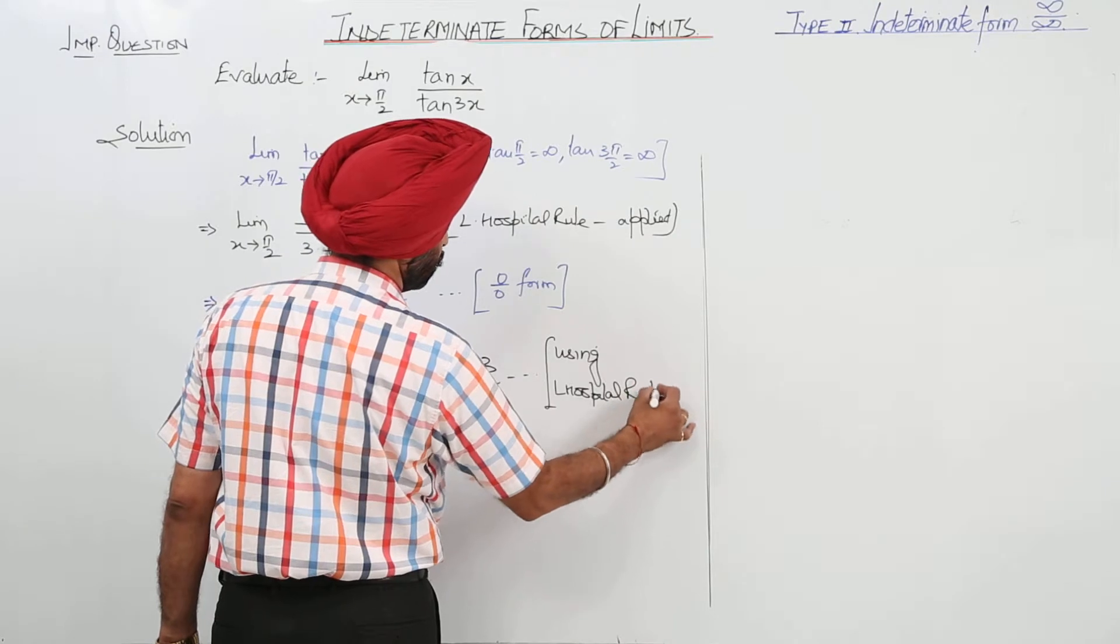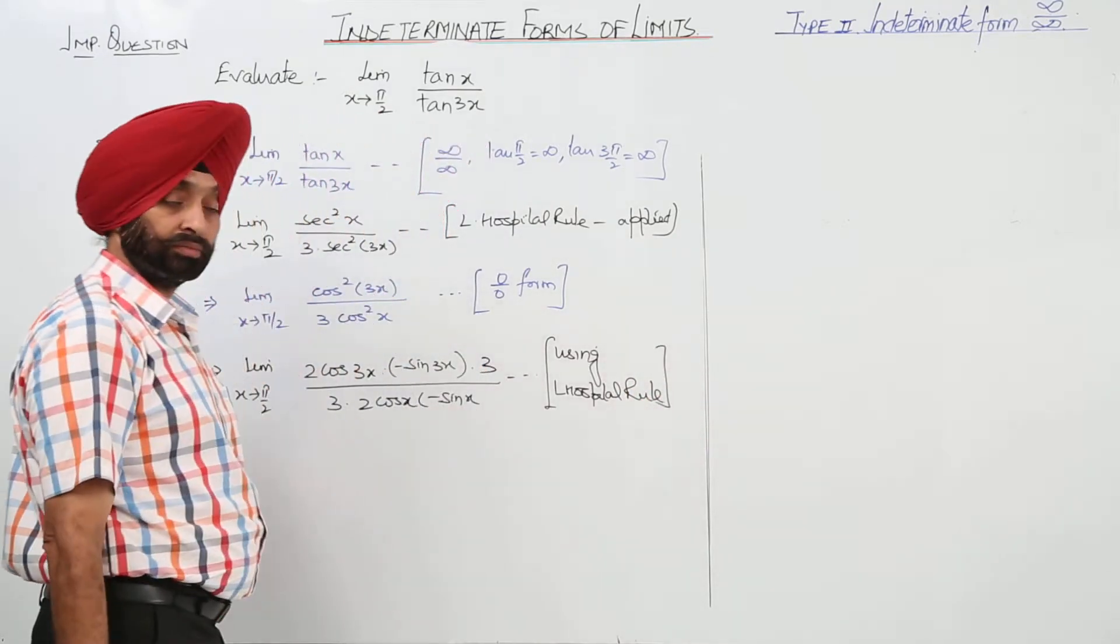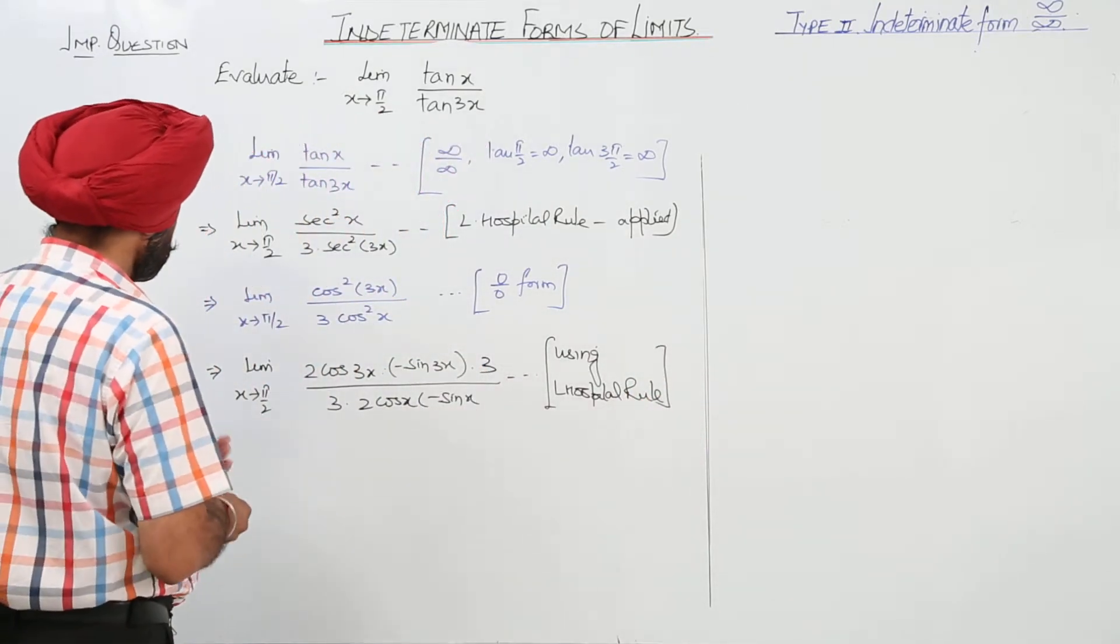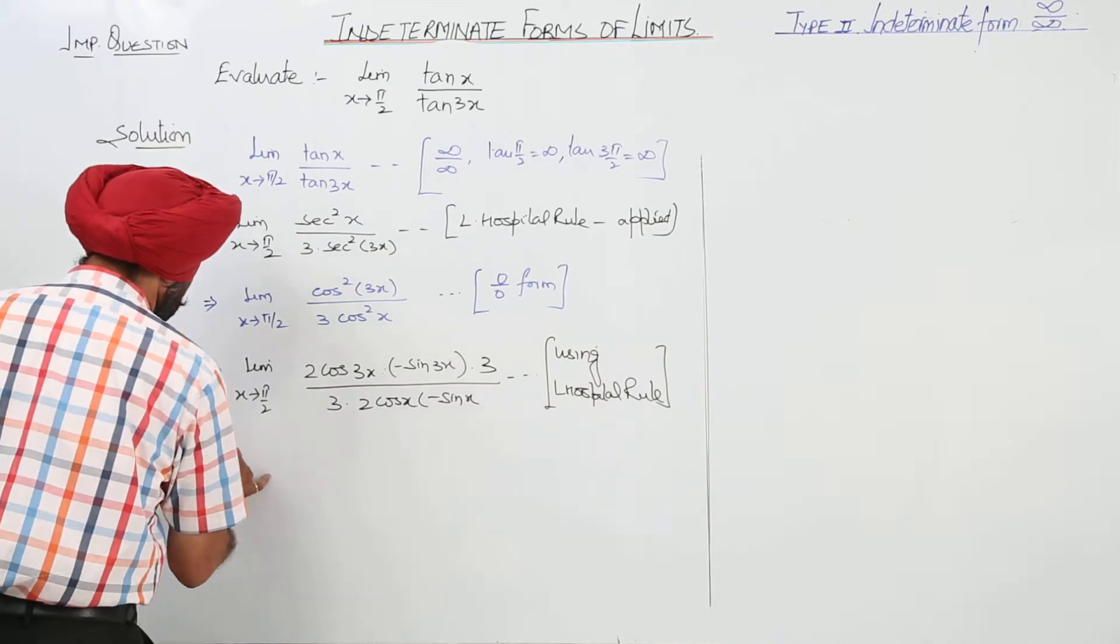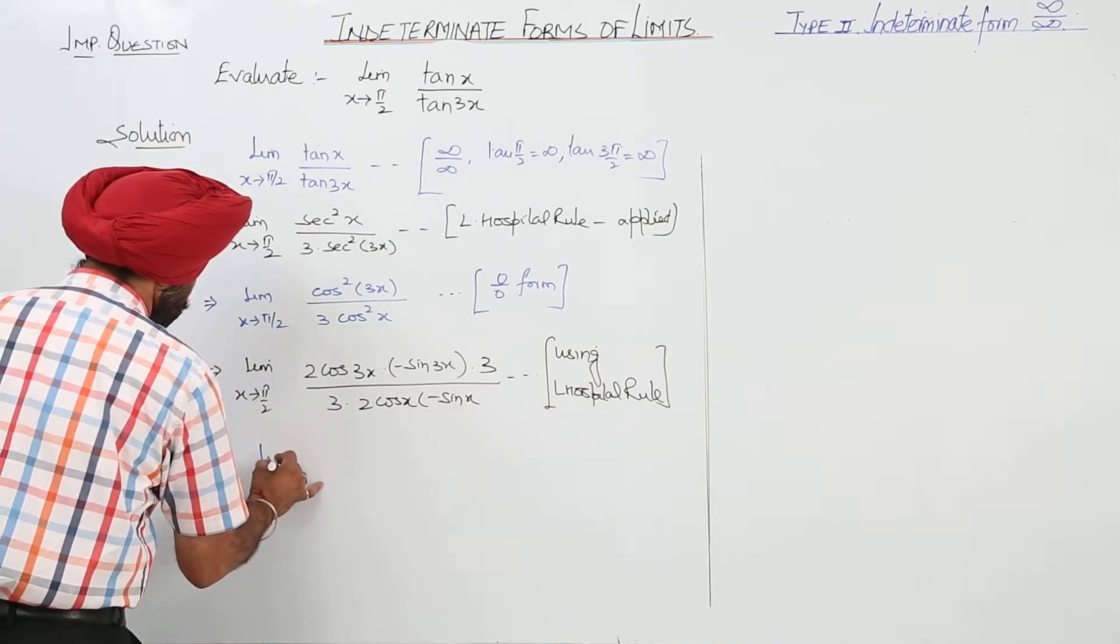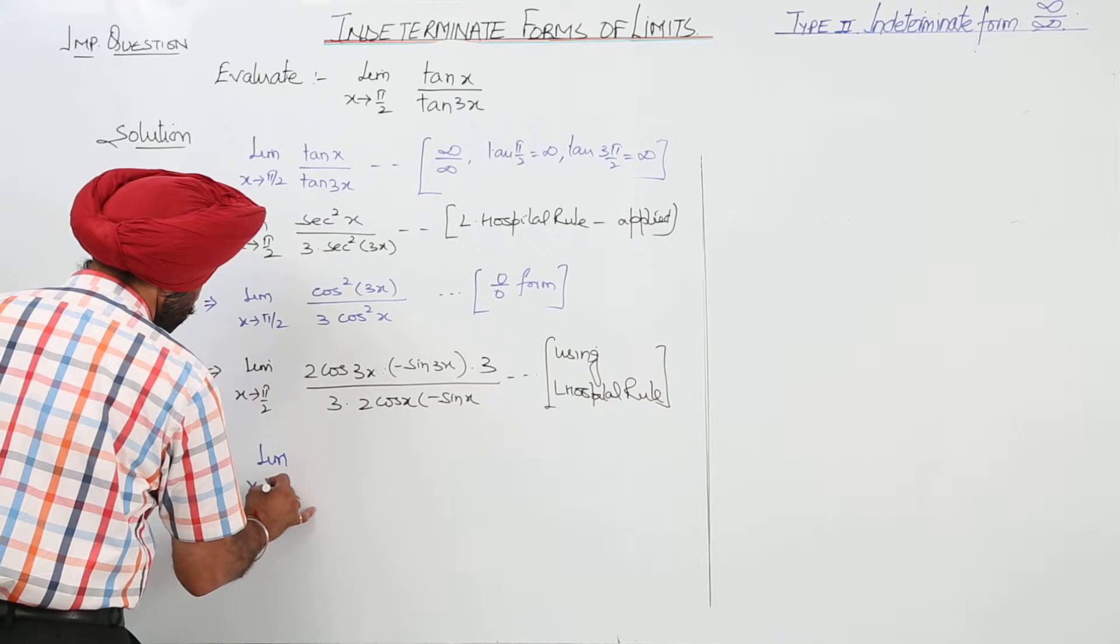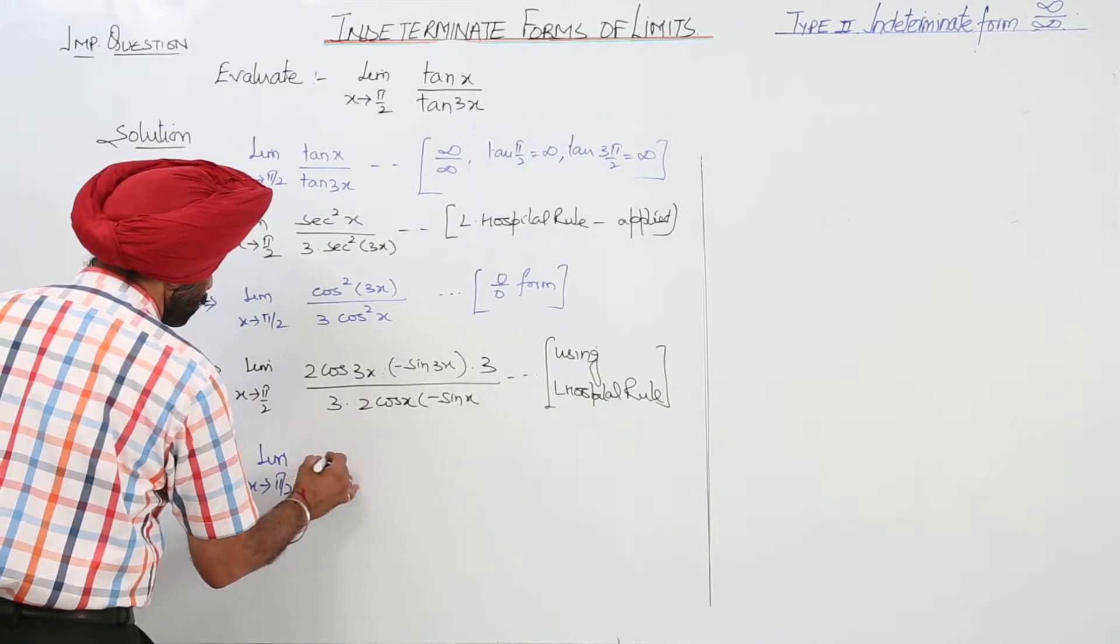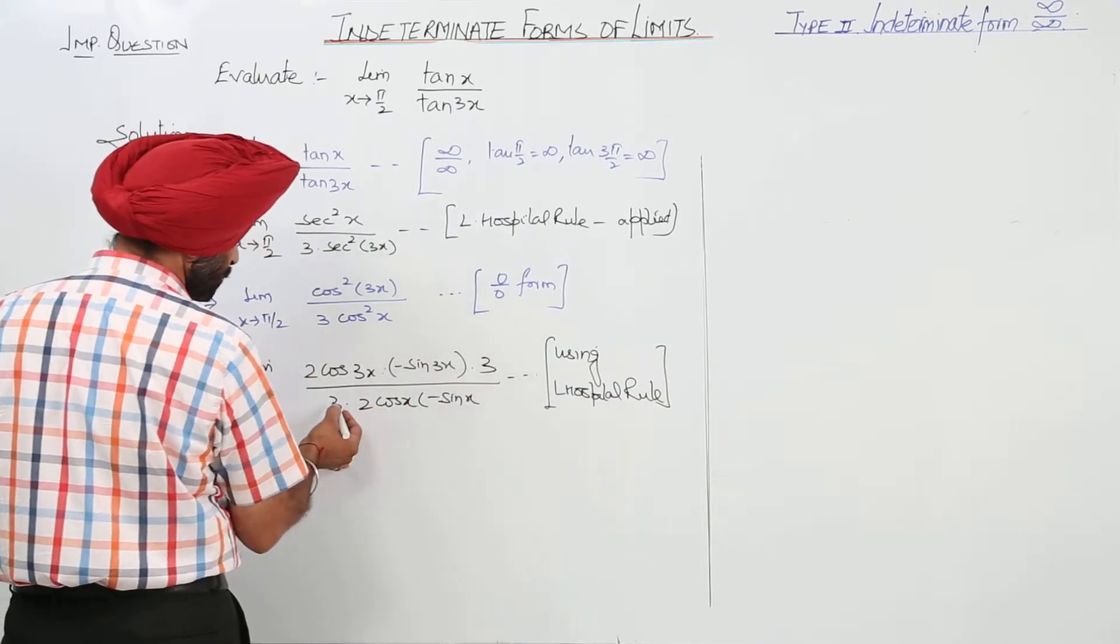Or you can write it applying L'Hôpital's. Now, what does this become? Limit x approaches π/2. Now, here this 3 and this 3 cancels.